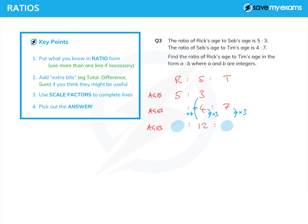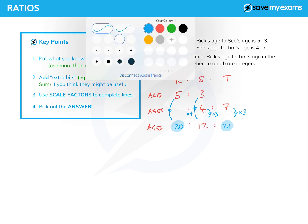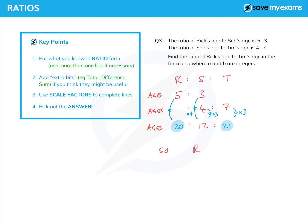And so the ratio of Rick's age to Tim's age is 20 to 21, and so we write that down in ratio form at the end here.